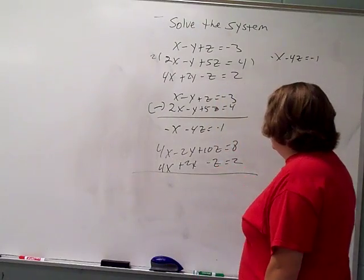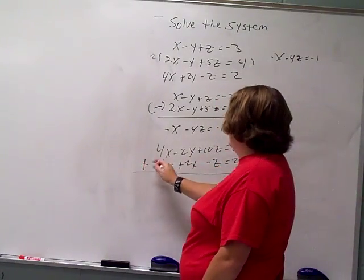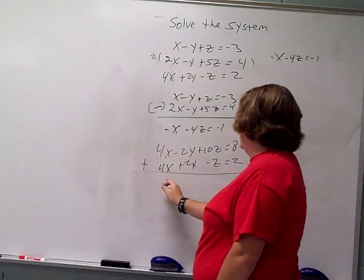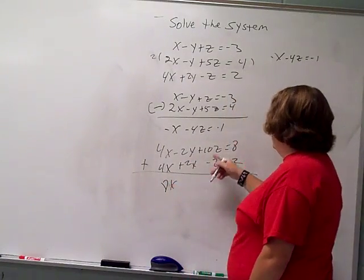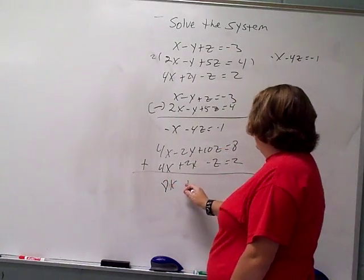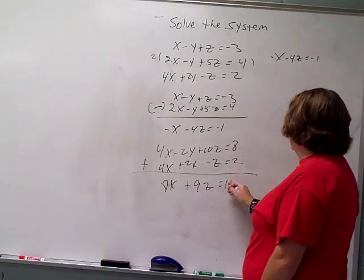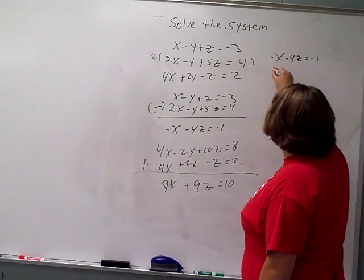So 4x plus 2y minus z equals 2. Okay, now looks funny here, but my y's are different signs, so that's an addition problem. So 4x plus 4x is 8x. Gone. 10z plus negative 1z is a positive 9z. And 8 plus 2 is 10. So there's new equation number 2.